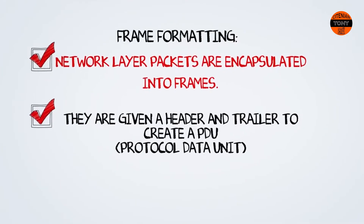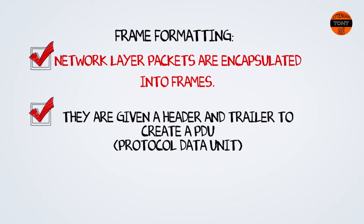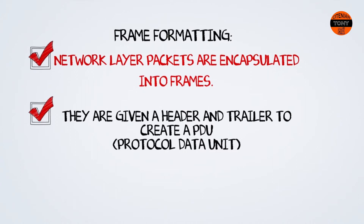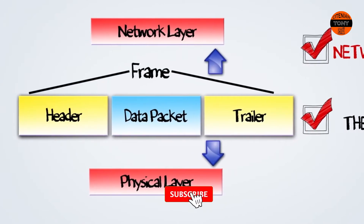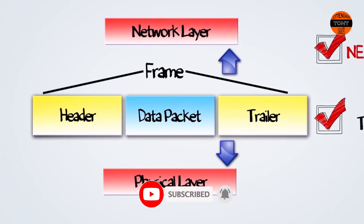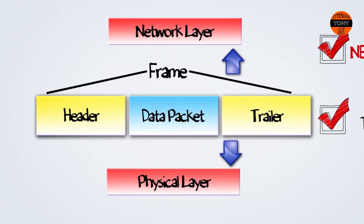In order for data to be sent across the network, network layer packets have to be encapsulated and formatted into frames. In this example, we'll talk about the Ethernet 2 type frame. Ethernet frames are given a header and trailer to create a protocol data unit. The data packet is taken from the network layer above and fitted with a header and trailer in order to be transmitted across through the physical layer and down the network. This is what's known as encapsulation.